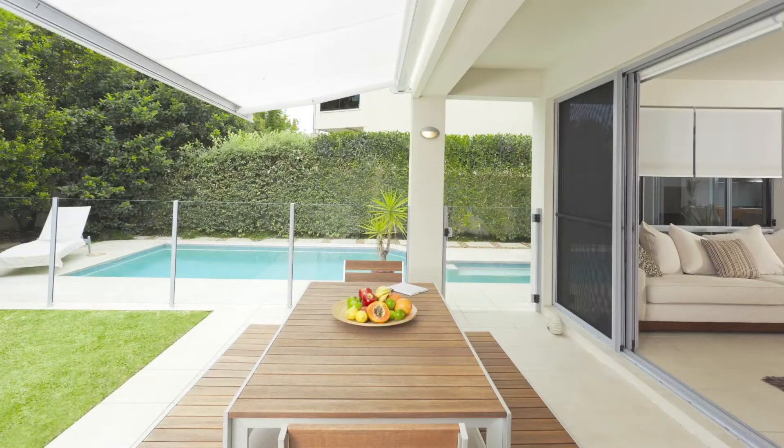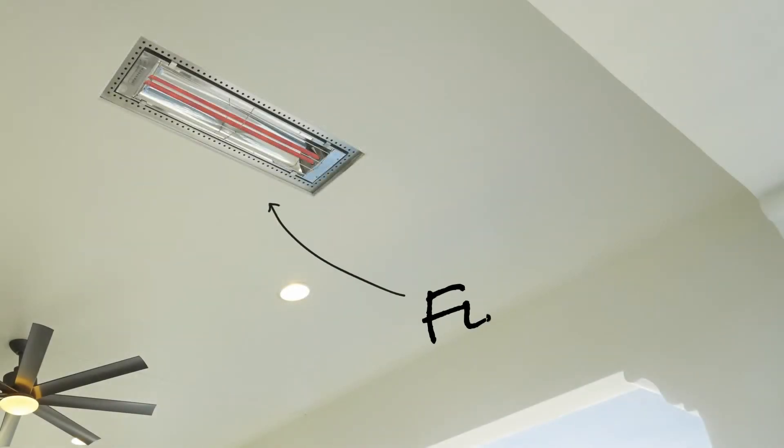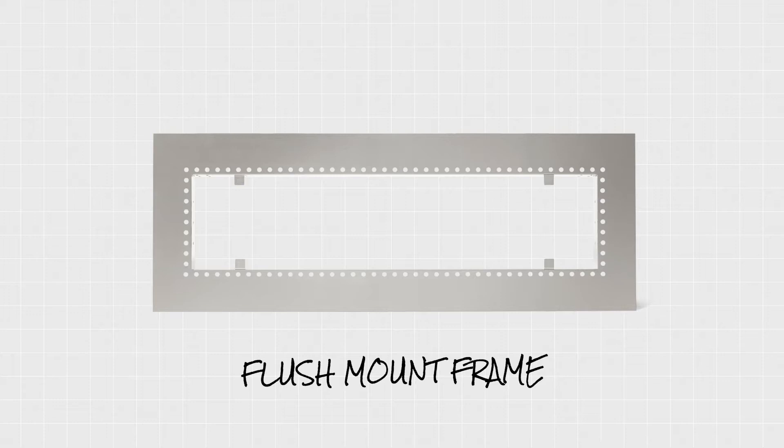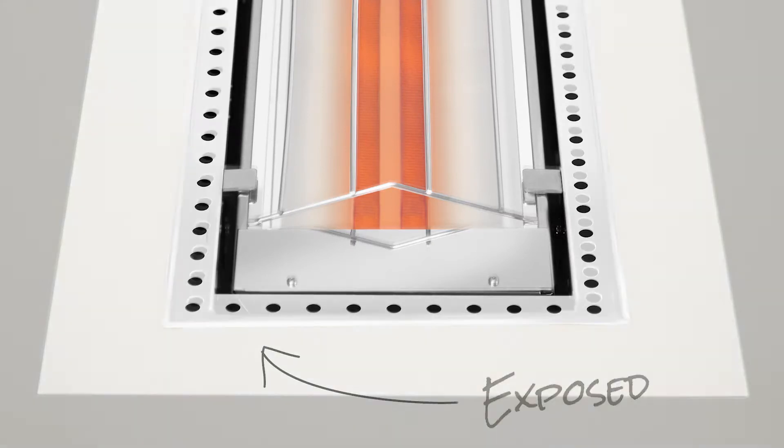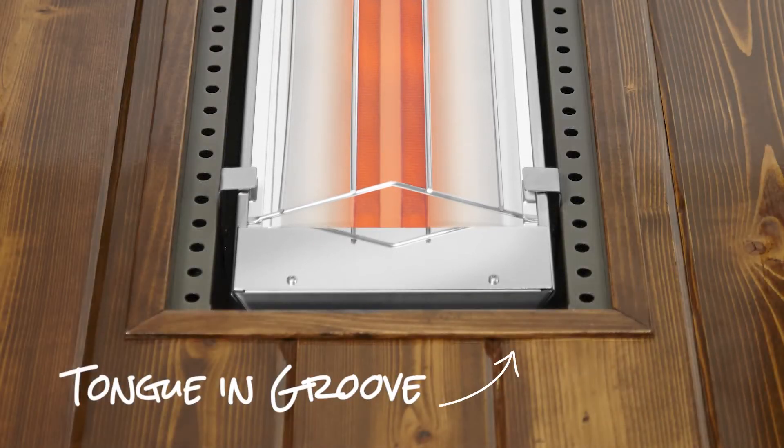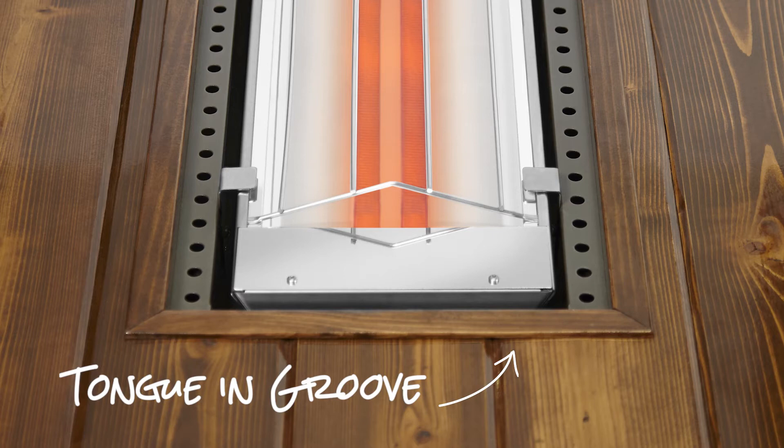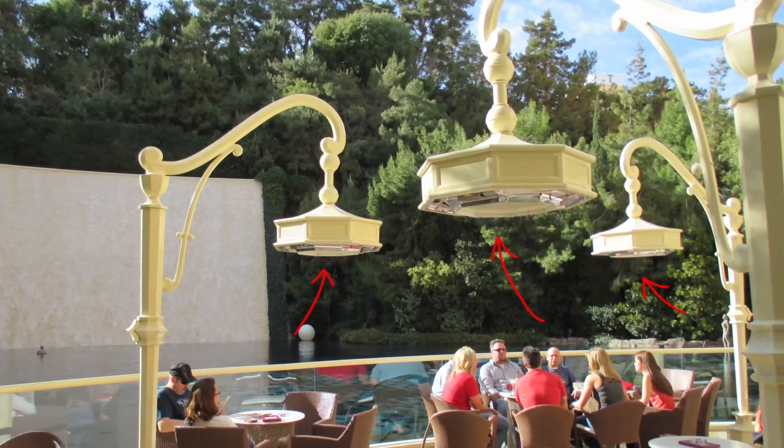For mounting, Infratech heaters come with six-inch brackets to meet clearance requirements and can be mounted to a wall, ceiling, or pole. All C, CD, W, and WD series heaters are compatible with our popular flush mount application. To flush mount an Infratech heater, you must also order a flush mount frame, which is an additional accessory sold separately. The flush mount frame may be installed with the edges exposed or can be covered by drywall, plaster, stucco, or tongue-and-groove wood ceiling treatment to blend seamlessly into your décor.